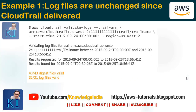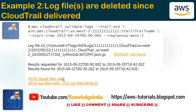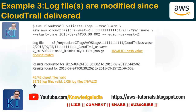After pressing enter, you will see results covering different scenarios. In the first scenario, if nobody has changed anything with your log files, you will see how many digest files got checked, how many log files got checked, and that everything is valid — for example, 43 digest files are valid. In another scenario where somebody has deleted a log file, CloudTrail will calculate and say that out of 31 files, 30 are valid but one is invalid because it's missing.